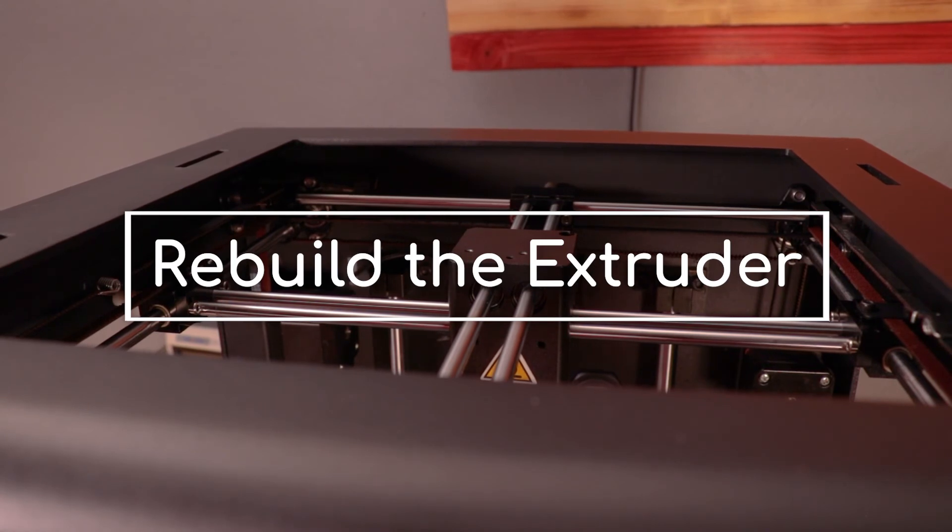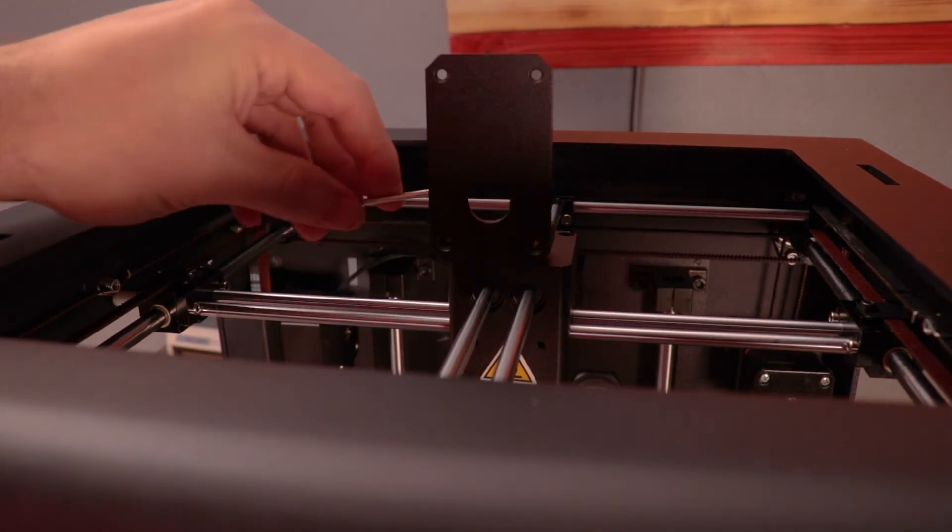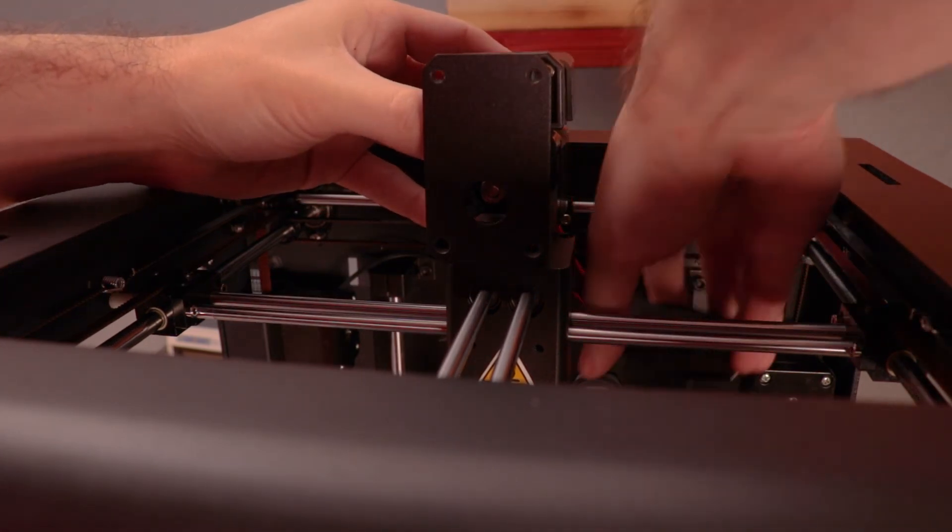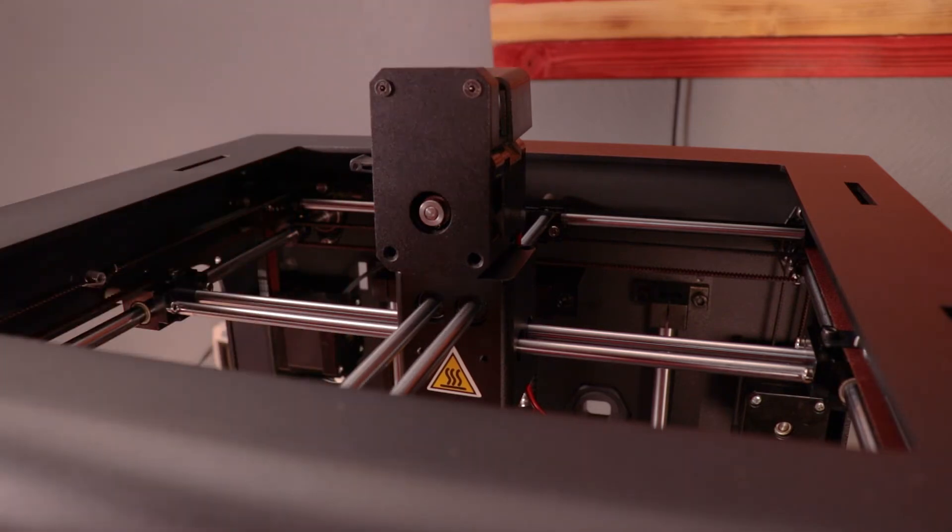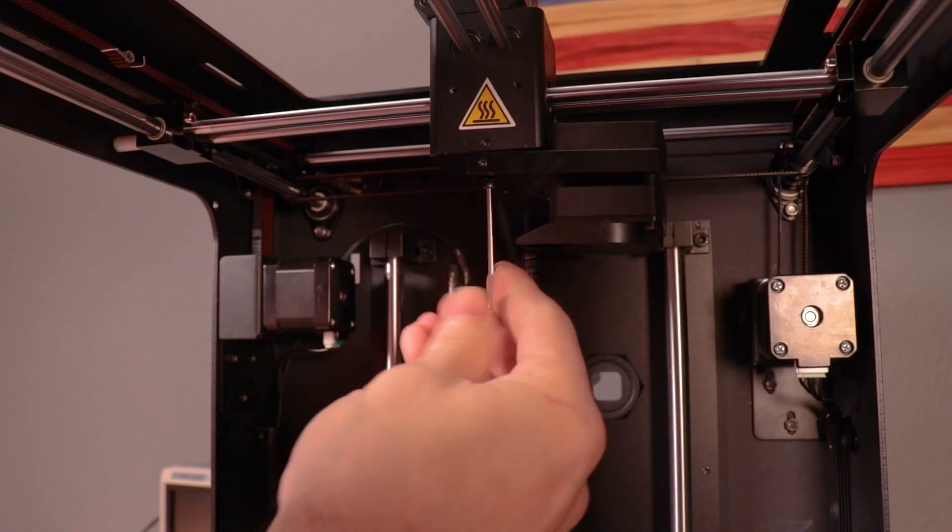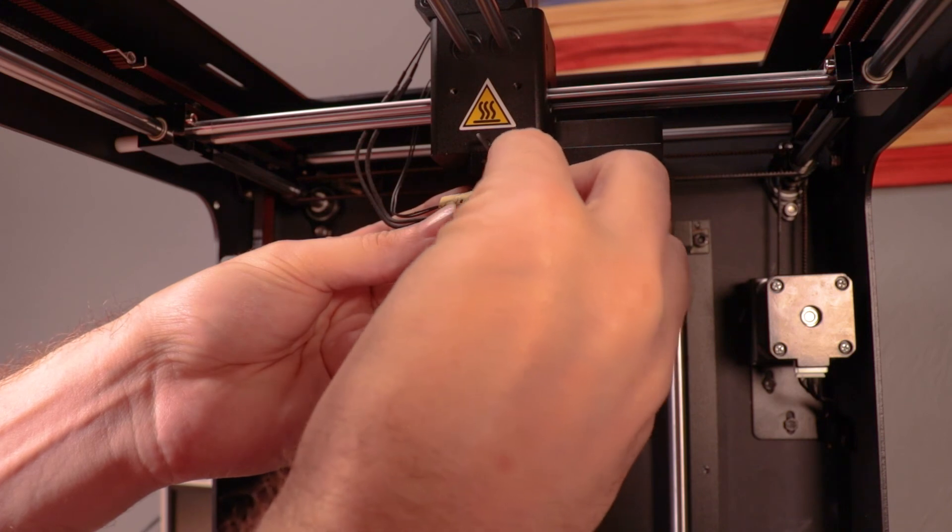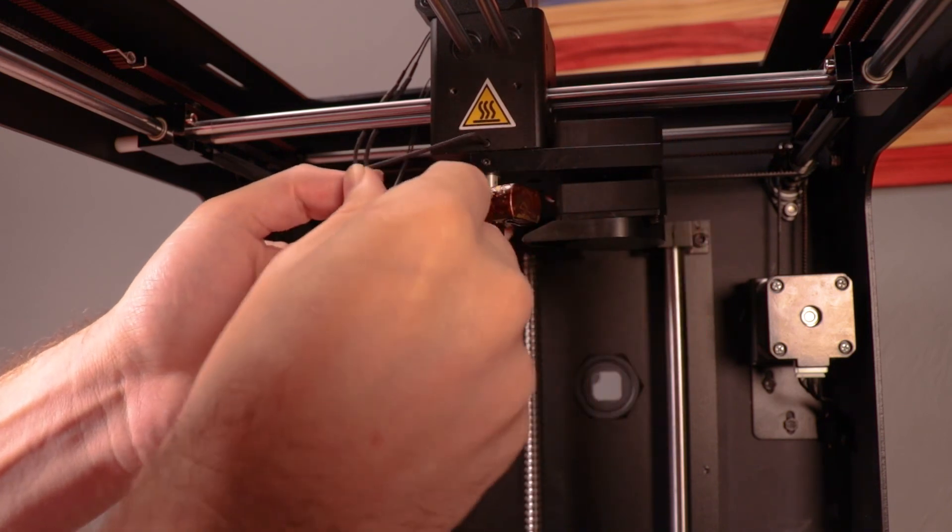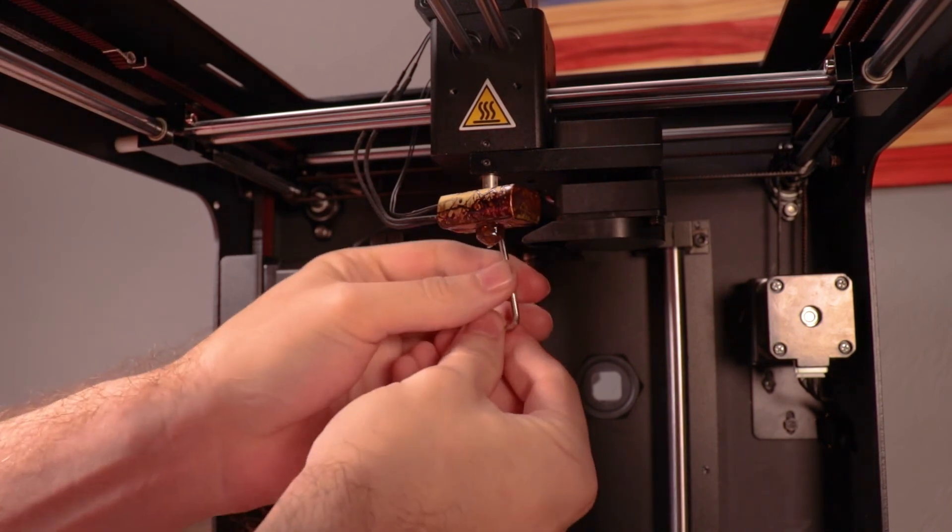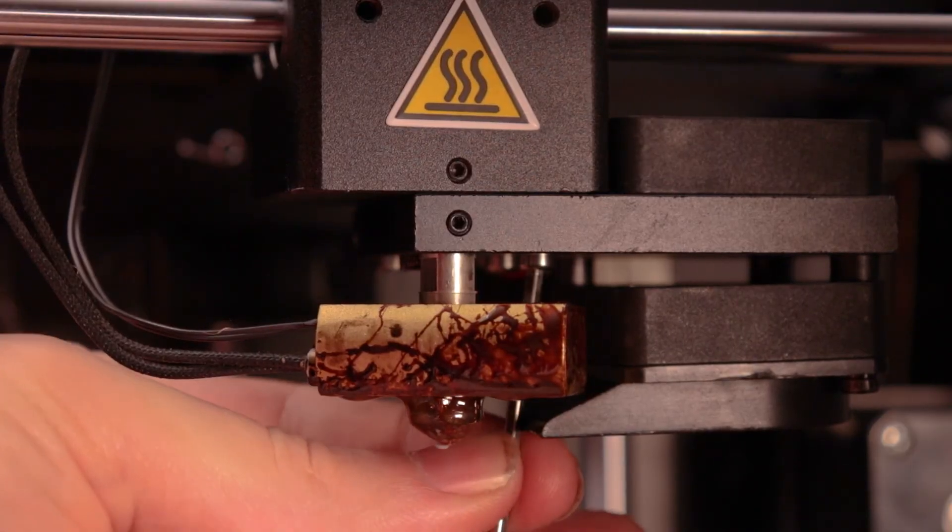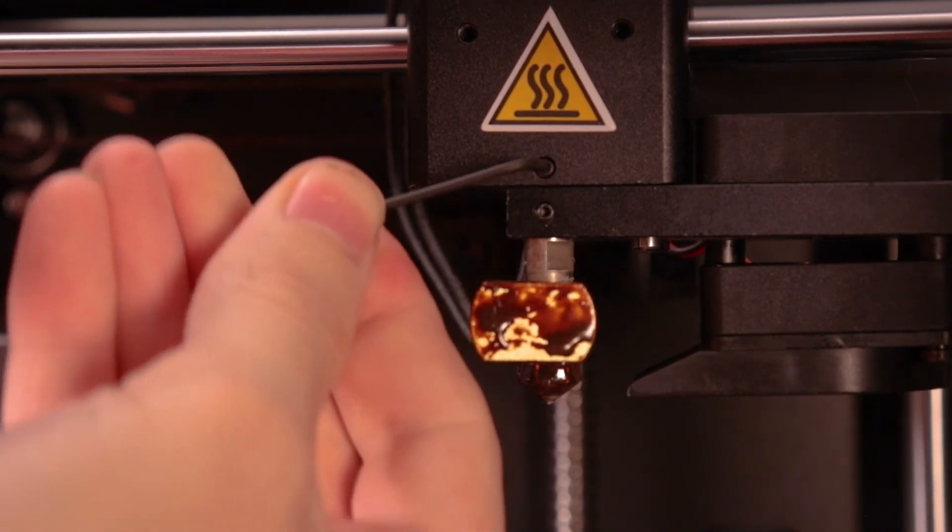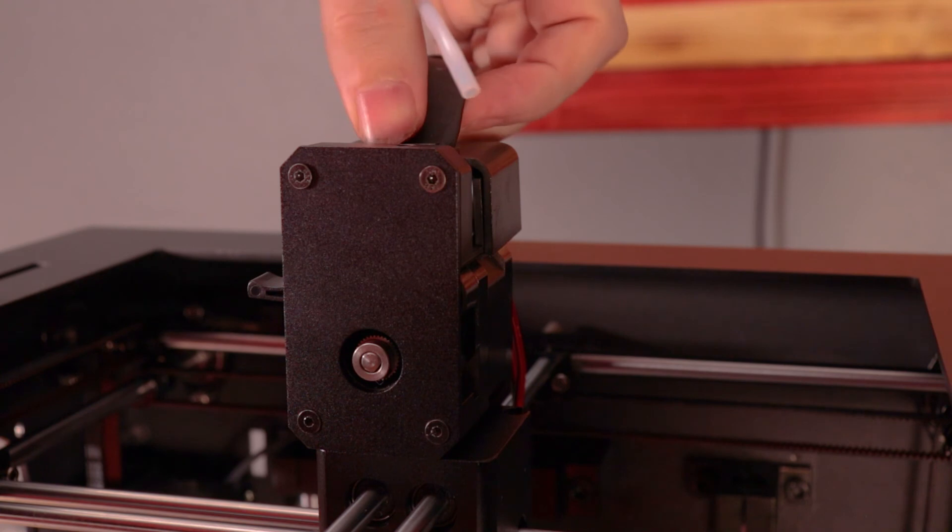Now flip the printer back over and rebuild the printhead. Starting with the bracket on top. Then set the stepper and feeder onto the block. Install the screws that hold the stepper and electronics to the front bracket. Begin installing the heat sink and the fan to the block. Install the extruder into the heat sink and block and tighten one of the set screws. Then snug down all the screws holding the heat sink to the block. Properly orient the extruder and tighten down both set screws. And finally install the ribbon cable.